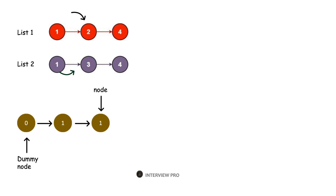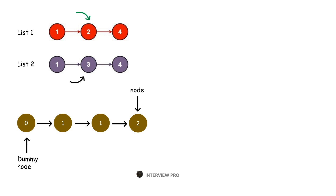Now we move the pointer to the next node in list 2 and compare 2 and 3. The smaller one is in list 1 — the node with value 2. So let's add that to our dummy list and update the node pointer. Moving the pointer in list 1 to the next node, we have value 4 and value 3 in list 2. The smaller one is node with value 3, so let's add it to our dummy list and update the node pointer.